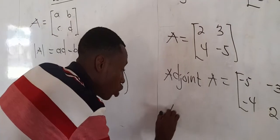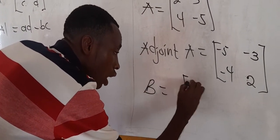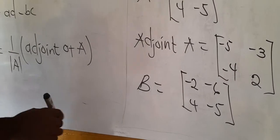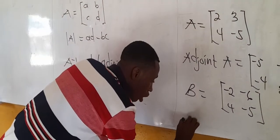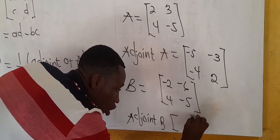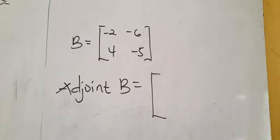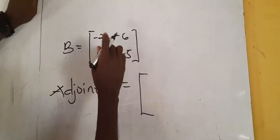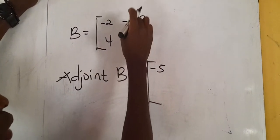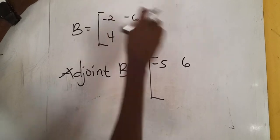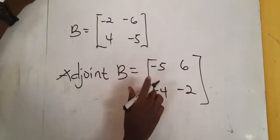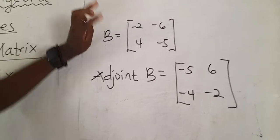Let's do one more. If you have a matrix B equal to [-2, -6; 4, -5] and we are asked to find the adjoint, we swap the positions: -5 will come here. We negate the off-diagonal elements, so it becomes +6. When we negate 4 it will be -4, then -2 comes here. This becomes the adjoint of matrix B.